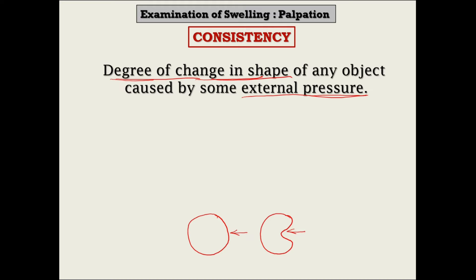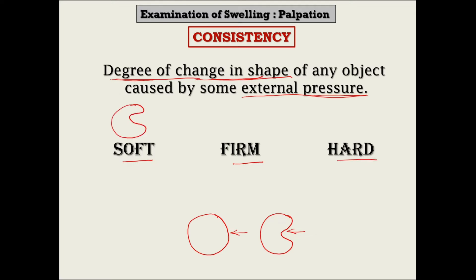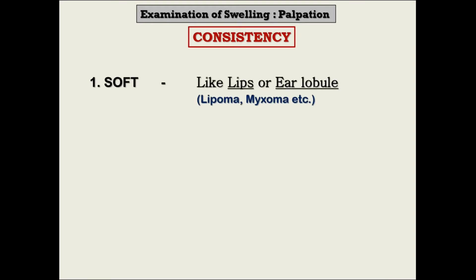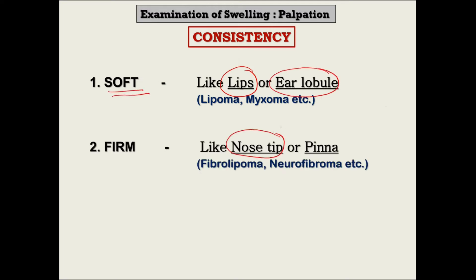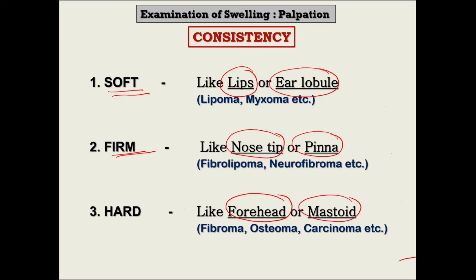There are three basic consistencies: soft, firm, and hard. If there is a great change in shape, it is soft; if there is some change, it is firm; and if there is no change at all, it is hard. Our lips and ear lobule are soft; the nose tip and pinna are firm; and bony parts like the forehead and mastoid are hard — because pressure causes great distortion of lips or ear lobule, some distortion of nose tip or pinna, and no change in the forehead or mastoid process.